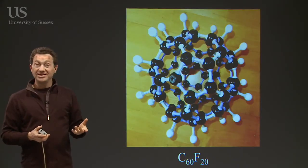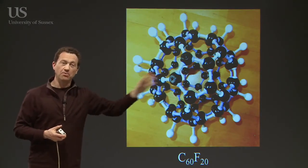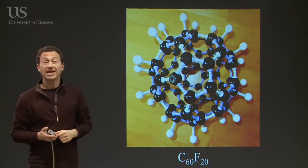You can also react with fluorine. You end up with these beautiful models, so you've got the basic C60 model here and the white things are 20 fluorine atoms.